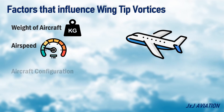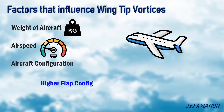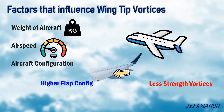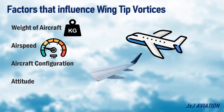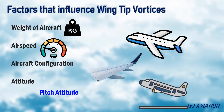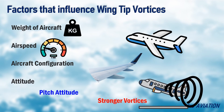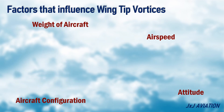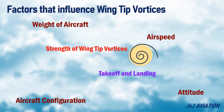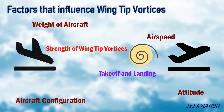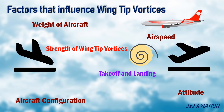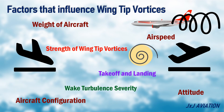Aircraft configuration — in higher flap configuration, the vortices strength is lower. Attitude — when the pitch attitude of an aircraft increases, the strength of vortices increases. Based on the above factors, it can be concluded that the strength of the wingtip vortices is highest during takeoff and landing. As the strength of the vortices increases, the severity of the wake turbulence also increases.